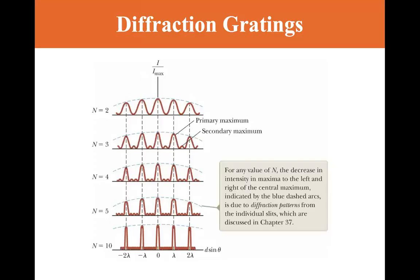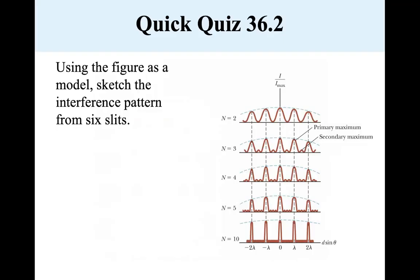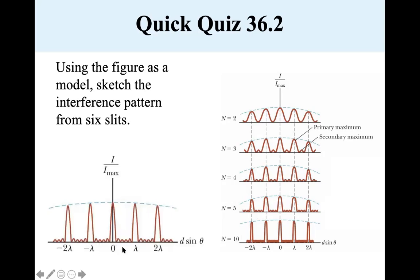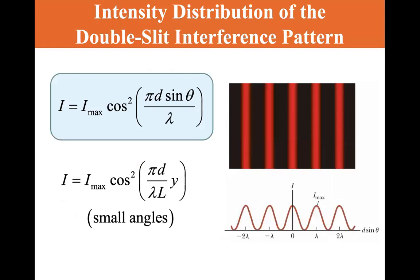Using the figure as a model, sketch the interference pattern from six slits. The figure jumps from five to ten, so it's going to look a little bit like five but a little greater. There's going to be more bumps — we've seen one bump, two bumps, three bumps — so there are going to be four bumps for N equal six. And sure enough, you can see one, two, three, four. This is what the six slits look like, and that's the end of 36.3. The intensity formula is I equals I_max cosine squared of πD sinθ over λ, or for very small angles, πD over λL times Y.